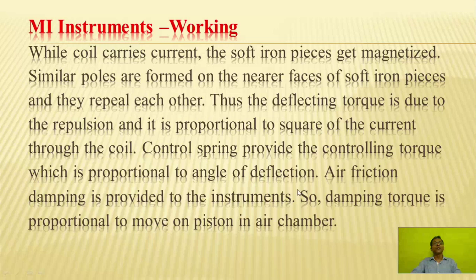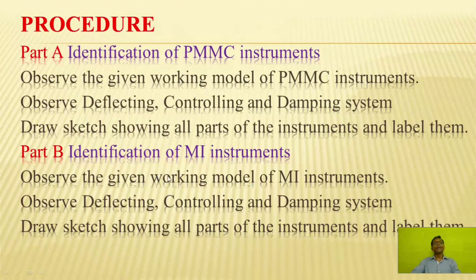We will now see the working of MI type instruments. While the coil carries current, the soft iron pieces get magnetized. Similar poles are formed on the nearer faces of the soft iron pieces and they repel each other. Thus, the deflecting torque is due to repulsion and is proportional to the square of the current through the coil. Control springs provide the controlling torque proportional to the angle of deflection. Air friction damping is provided, so damping torque is proportional to the movement of the piston in the air chamber.